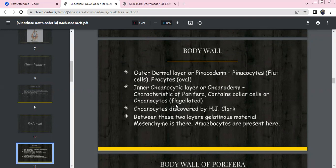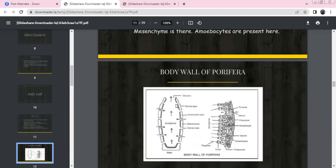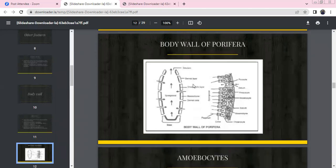The inner layer is choanoderm with collar cells or choanocytes, which are characteristic of Porifera. They are flagellated, and the flagella create water flow from ostia through spongocoel to osculum. Choanocytes were discovered by H.J. Clarke. Between these two layers is gelatinous mesenchyme with amoebocytes.